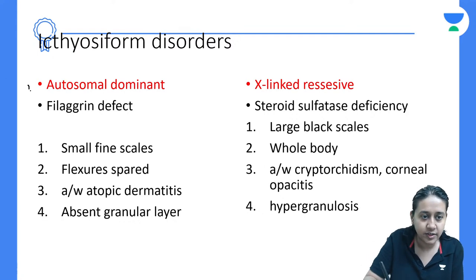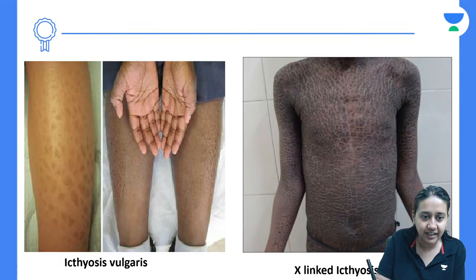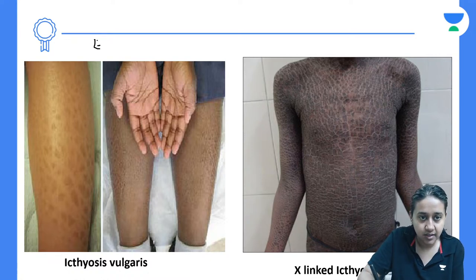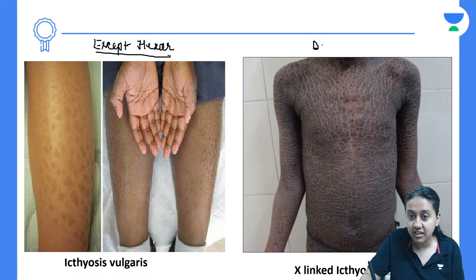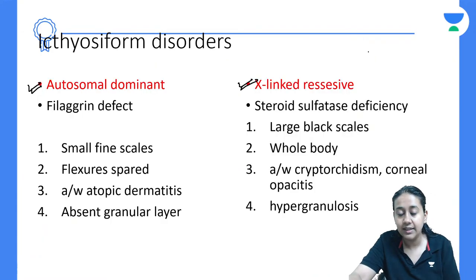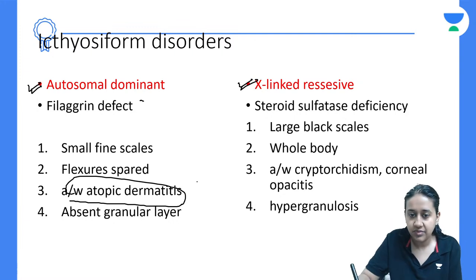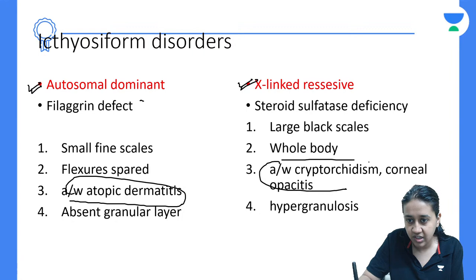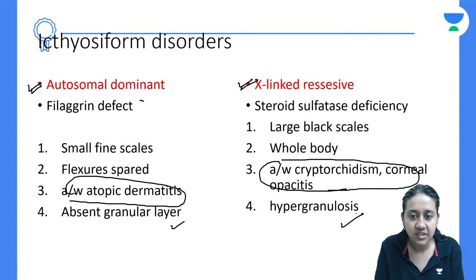We have two types of ichthyosis vulgaris: autosomal dominant type and X-linked recessive type. In autosomal dominant, there are light-colored scales all over the body except flexors. In X-linked recessive, we have dark-colored scales all over the body — including the flexors. These are the two key clinical differences.